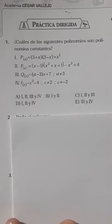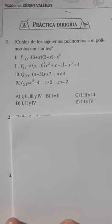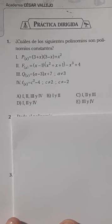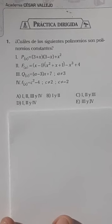Díganme cuál sería la respuesta del primer problema. Te están diciendo que debes ver cuál de ellos, cuál de esos cuatro, son polinomios constantes. ¿Cuáles serían? Díganme su posible respuesta, muchachos, del problema número 1. ¿Cuál de esos cuatro son polinomios constantes?